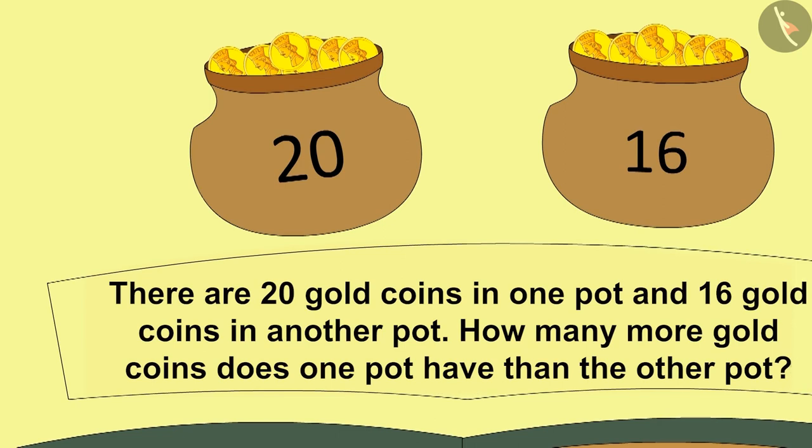Absolutely right! Here, there are 20 gold coins in one pot. And in another pot, 16 gold coins. How many more coins are there in one pot from another?